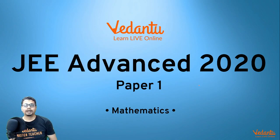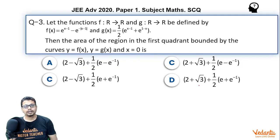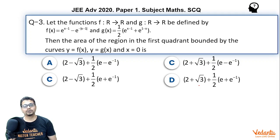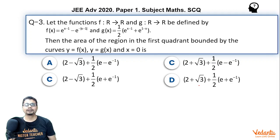Hi everyone, I am Shubham Jhavar. I am a master teacher at Vidantu. We are discussing JEE Advanced 2020 Paper 1 Mathematics. The question for this video: let the functions f defined from real to real and g defined from real to real be defined by f(x) = e^(x−1) − e^(−|x−1|) and g(x) = ½ · (e^(x−1) + e^(1−x)). Then the area of the region in the first quadrant bounded by the curves y = f(x), y = g(x), and x = 0 (the y-axis). It is a single correct type question.